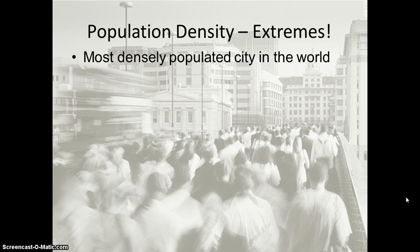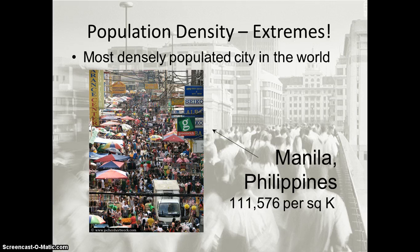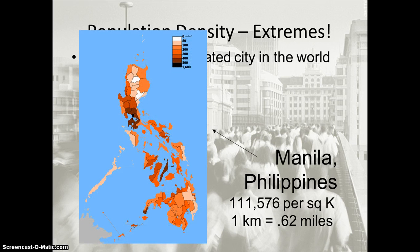Nevada is an example of an extreme population distribution in the United States, but there are even more extremes in the entire world. Manila, the city in the Philippines, is the most densely populated city in the world, with a population density of 111,000 people per square kilometer — one kilometer is 0.62 miles, giving an even bigger number per square mile. Looking at a map of the entire Philippines island chain, greater concentrations appear around Manila, while outlying jungle areas are relatively uninhabitable, so the population of the Philippines is not evenly distributed.